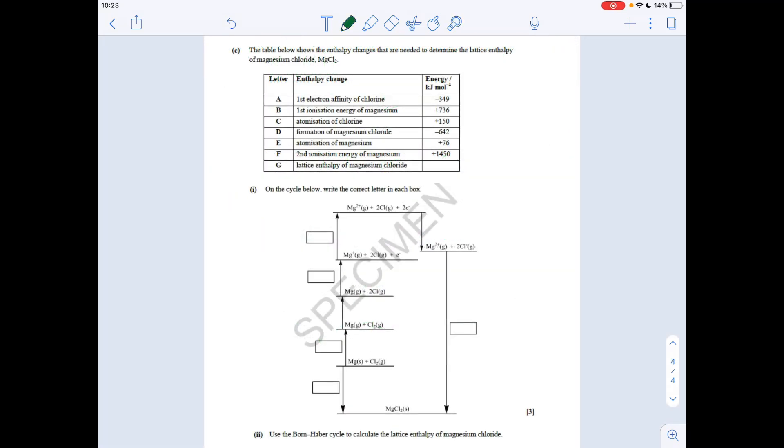So the question goes into a Born-Haber cycle now. I've zoomed out a little bit. I hope you can still see everything okay, just so everything's on the screen. So we've got to write the correct letter in each box for the cycle. So first thing is this change here - that's the enthalpy change of formation of magnesium chloride, because we've gone from elements to one mole of compound. So that is D. The next change here to here, the change there - magnesium solid to magnesium gas. So that's the atomisation of magnesium. So that's E.